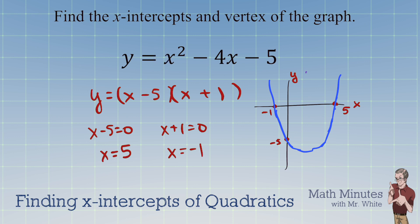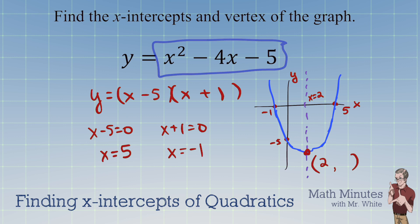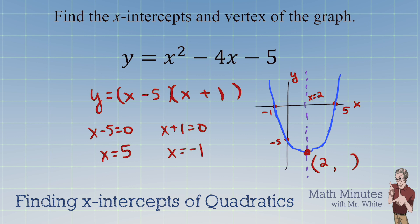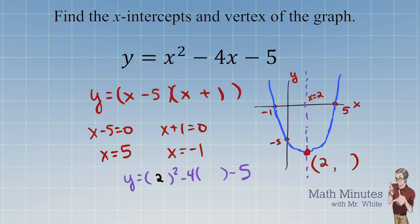To find the axis of symmetry, we average the two x-intercepts: 5 plus negative 1 equals 4, divided by 2, gives x equals 2. To find the vertex, we plug x equals 2 into the function: y equals 2 squared minus 4 times 2 minus 5, which is 4 minus 8 minus 5, equals negative 9. So the vertex is at (2, negative 9).